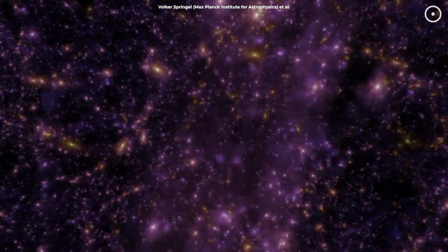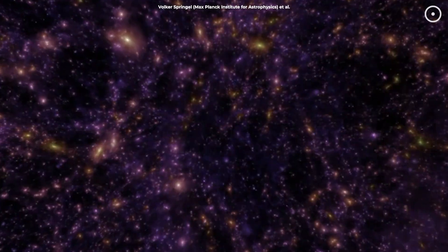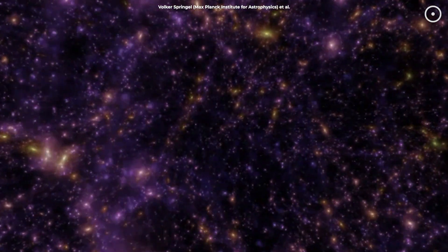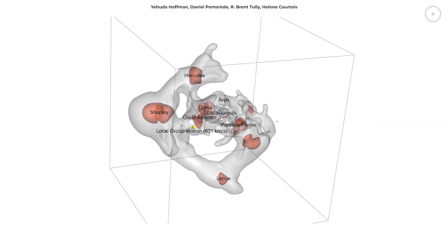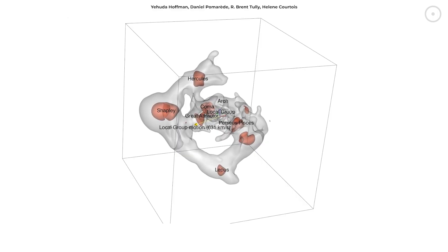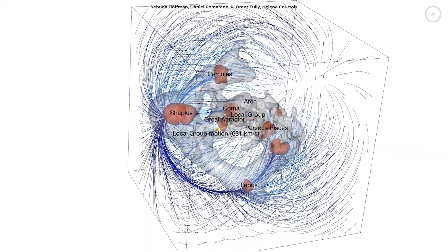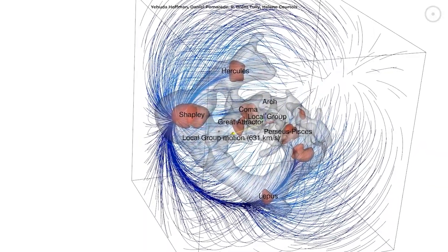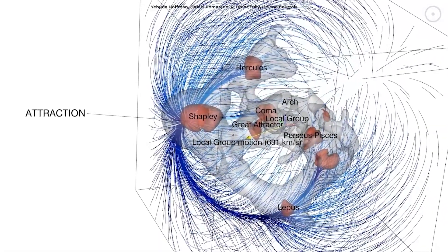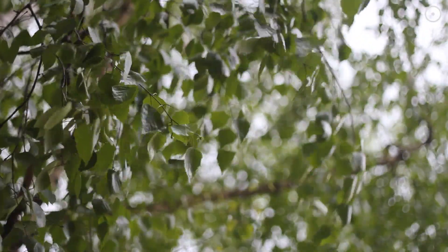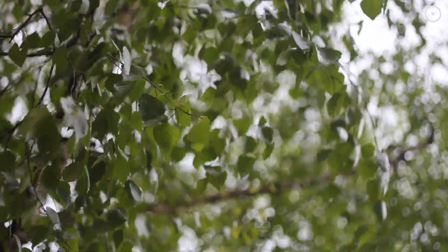Nevertheless, the new study is forcing scientists to rethink how the universe forms its largest structures. The Shapley concentration is so massive that it's actually helping us understand dark matter. That mysterious stuff that makes up most of the universe but we can't see. By watching how galaxies move within the Shapley concentration, we're finally starting to understand how this invisible force shapes our universe. It's like finally being able to see the wind by watching how leaves move.